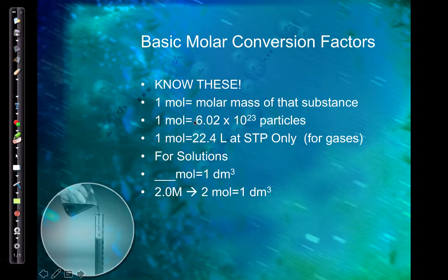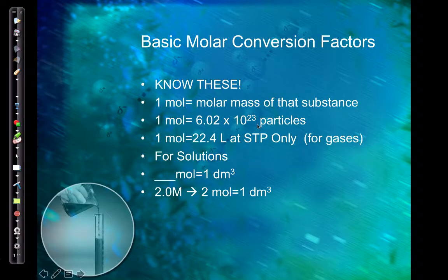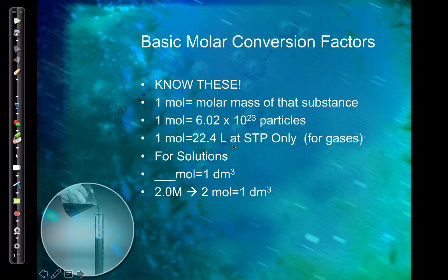So these are our mole conversion factors. One mole is going to be equal to the molar mass of that substance, which will be different for every substance. One mole is also equal to 6.02 times 10 to the 23rd particles — that could be ions, molecules, atoms, whatever. And for gases only, be very careful, 1 mole is equal to 22.4 liters at STP: standard temperature and pressure, so 0 degrees Celsius and 1 atmosphere.